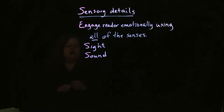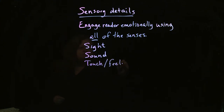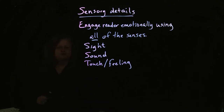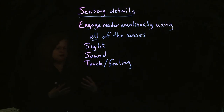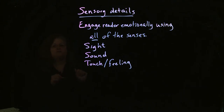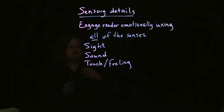Another sense you want to use to engage the reader emotionally is touch or feeling. This involves not just touching something physically — like putting your hand on a desk and saying it feels hard and a little bit nubbly — but it also involves feelings within you, your bodily reactions. For example, if you're describing a situation where you were nervous, you might describe how your heart is beating 90 miles an hour and your palms are all sweaty. This is a really good way to get the reader emotionally pulled into the situation.